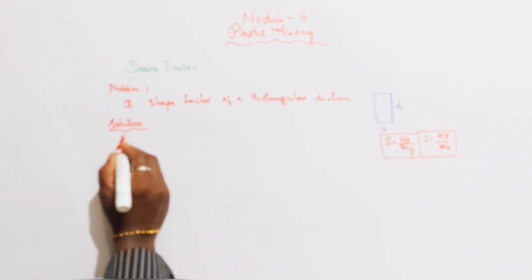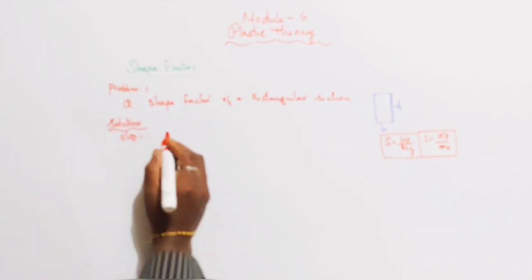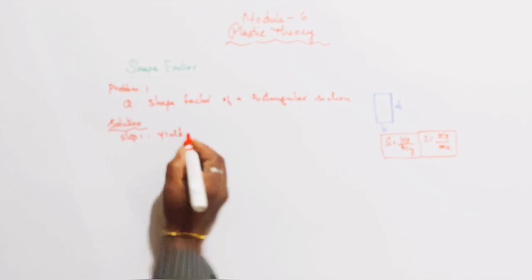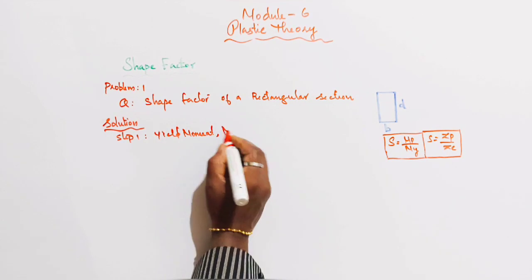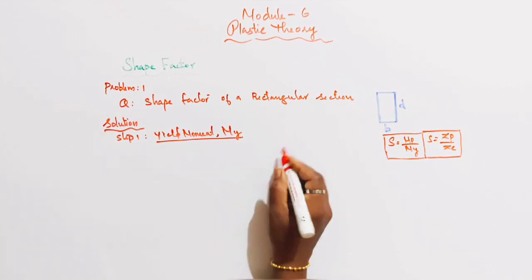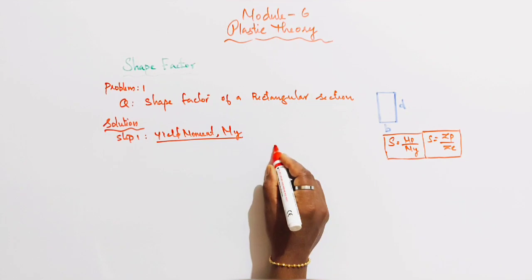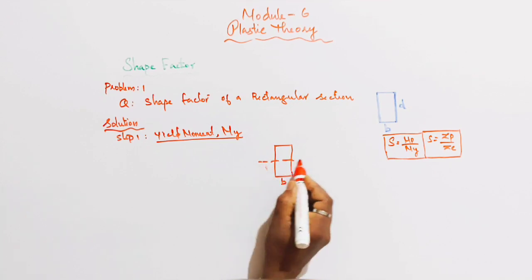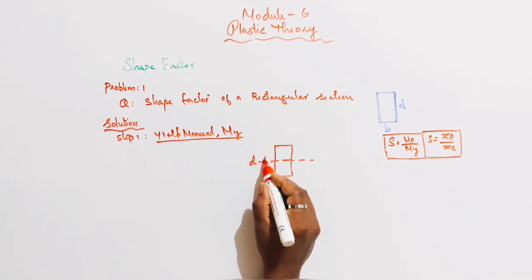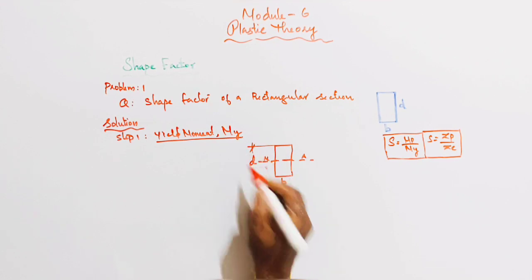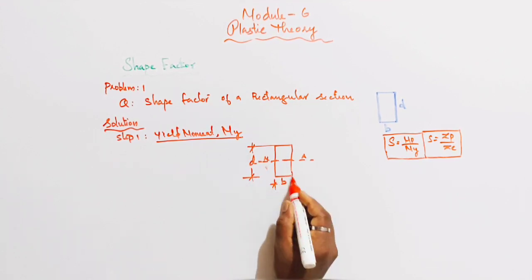Step 1. First yield moment, then plastic moment. First step to find out the yield moment. Yield moment is denoted by My. Step 1. Rectangular Cross Section. Breadth B, Depth D. Neutral Axis.